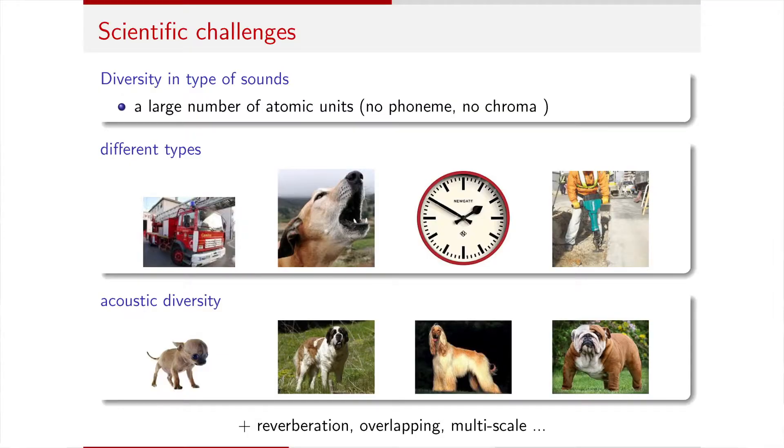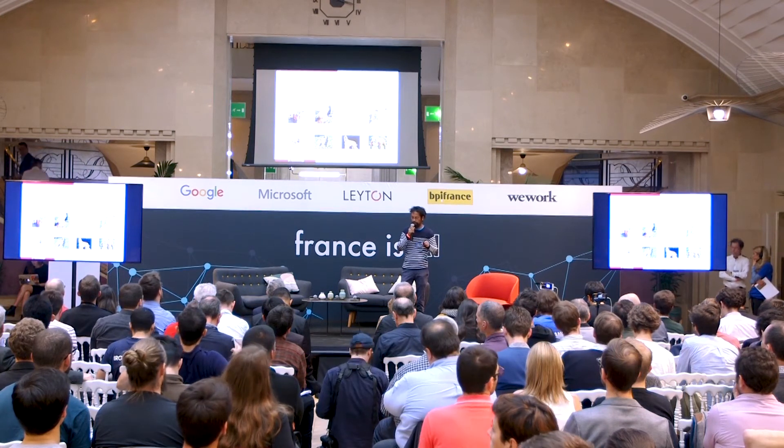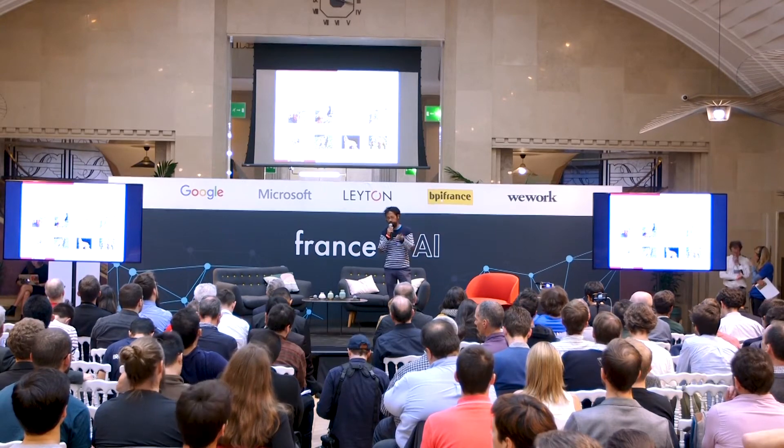What is the difficulty of computational audio analysis? Compared to speech and music, we have a large number of atomic units. In French, there are about 50 phonemes; in music, only 25 chroma. But in ambient sounds, there is a large number of atomic units and different types of sounds — short, strong, long, or very short but quiet. Even signals with the same semantic information, like dog barking, can have a lot of acoustic diversity. In addition, we have problems related to reverberation and overlapping of sounds.